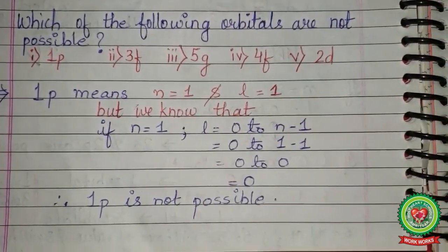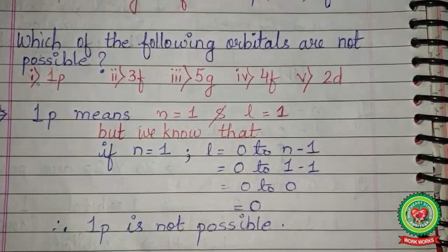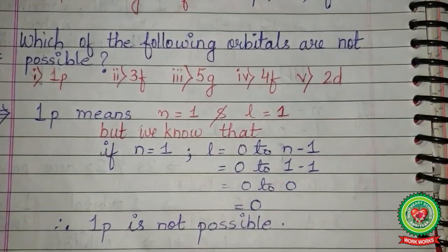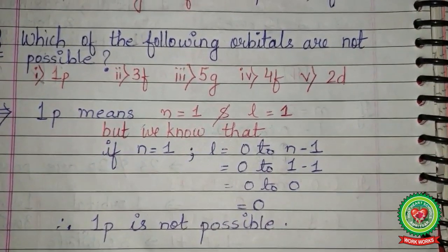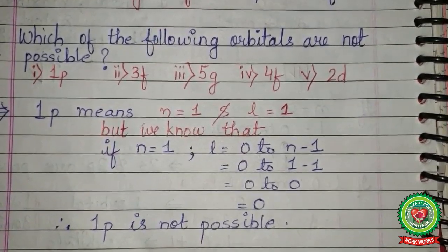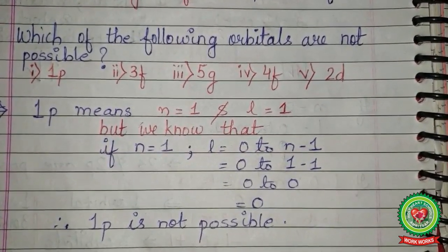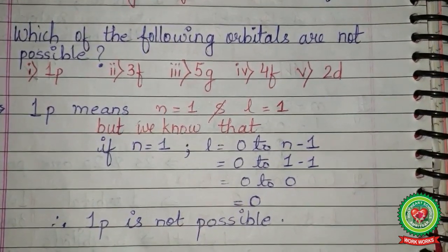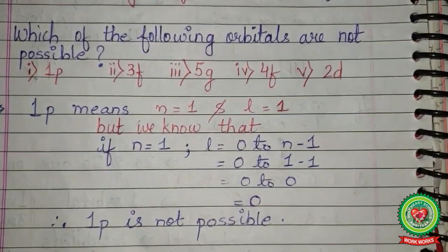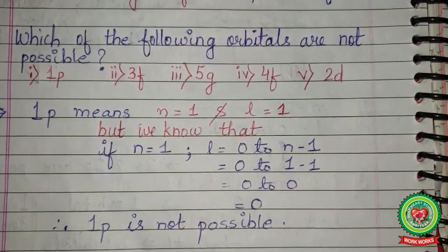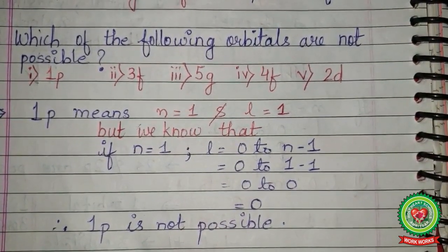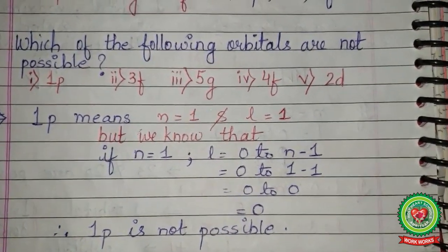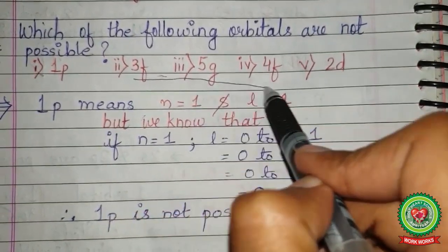The next question asks which of the following orbitals are not possible. For example, 1p means n = 1 and l = 1, but if n = 1 then l can only be 0 (i.e., only s is possible), so 1p is not possible. You will similarly evaluate each option given to determine which orbitals cannot exist.